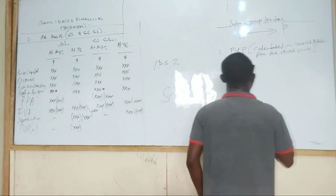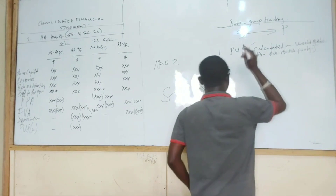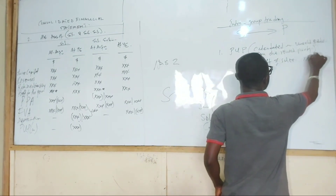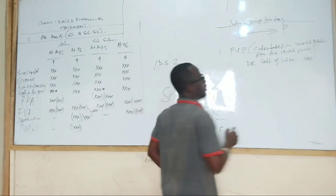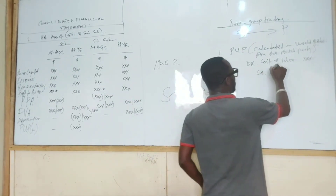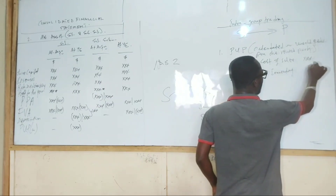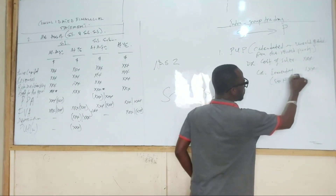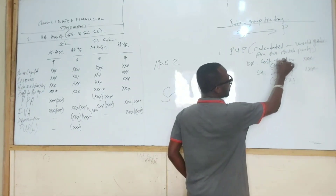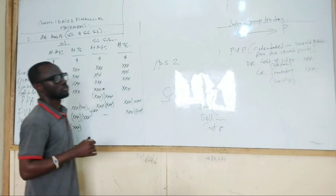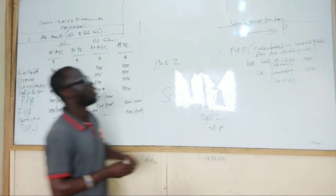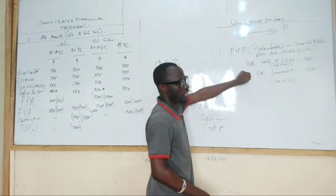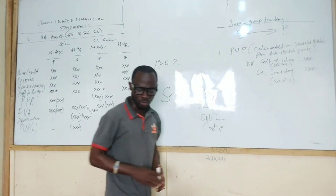So what then is the double entry for provision for unrealized profit? We are going to be debiting cost of sales — meaning you add it to cost of sales — and then you credit inventory, meaning you subtract it from the inventory value in the balance sheet. So this is a statement of financial position issue and a statement of profit or loss issue. This double entry is irrespective of who is selling; we will still debit cost of sales and subtract it from inventory.